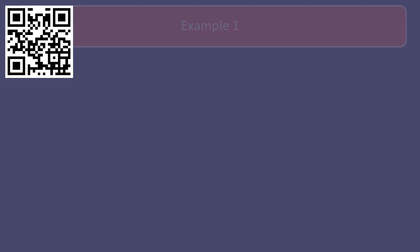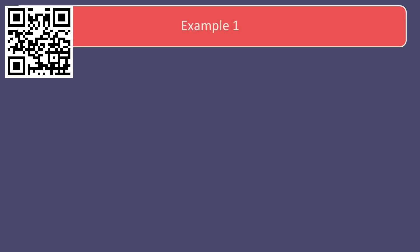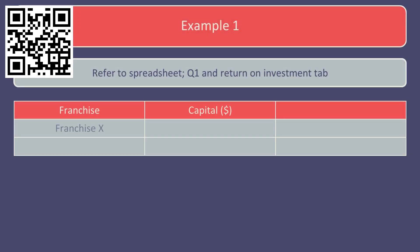Let's take a look at an example involving two company divisions. B Company has two franchises, X and Y, in different parts of town and wants to monitor the performance of the two managers who have full control over the investments. The cost of capital of the two franchises is 10%, and currently the return on investment of each franchise is 15%.